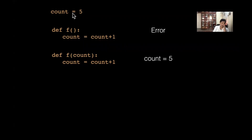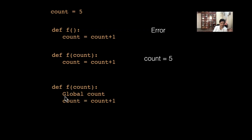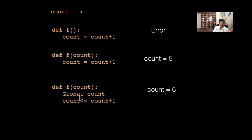If you want to change the global count to 6 from within the function, you declare 'global count' inside the function, then do count = count + 1. After calling f(), printing count outside gives 6. By declaring it global, any changes made inside the function now affect the global count. That's how you modify a global variable from within a function.